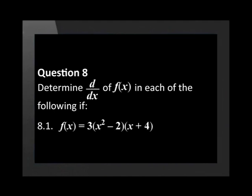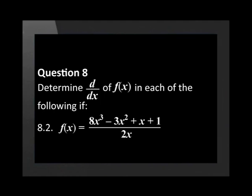Determine the derivative of f of x in each of the following: f of x is equal to 3 bracket x squared minus 2 close bracket, bracket x plus 4 close bracket; f of x equals 8x cubed minus 3x squared plus x plus 1 all divided by 2x; f of x equals 4 over square root of x plus 6 over cube root of x squared; f of x equals x squared minus 3x minus 4 all divided by x plus 1.